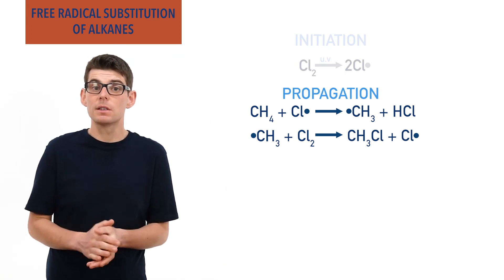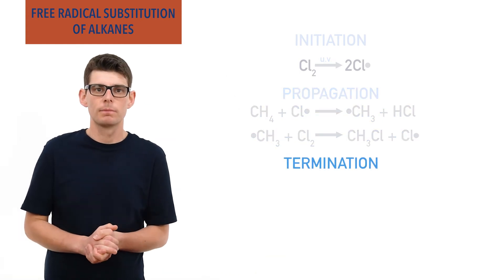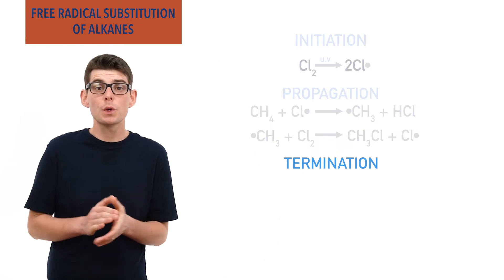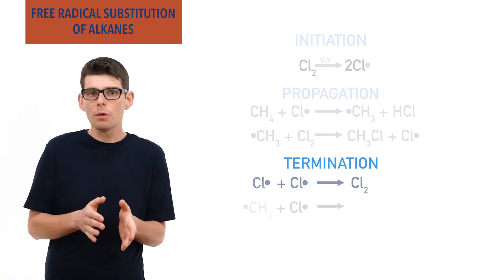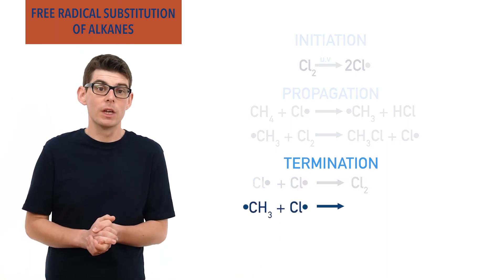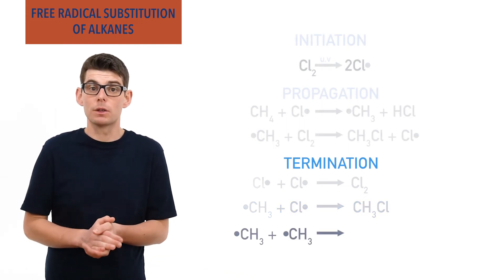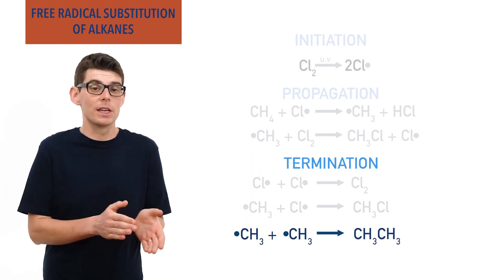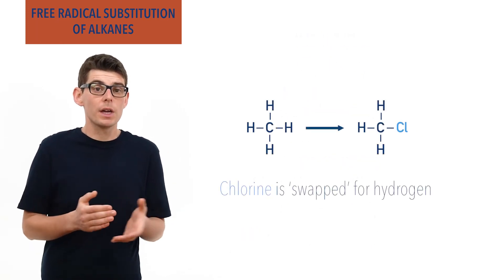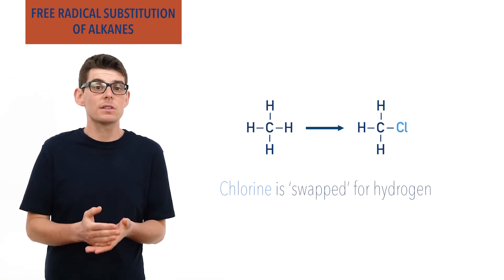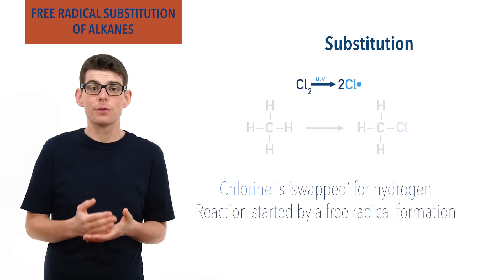Finally, two radical species can combine together to form a stable non-radical molecule in a termination step. There are several possibilities: two chlorine radicals can combine to reform a chlorine molecule, Cl2; a chlorine radical and a methyl radical can combine to form chloromethane, CH3Cl; and two methyl radicals can combine to form ethane, CH3CH3. For chloromethane, a chlorine group has been substituted for a hydrogen in the original methane, making this a substitution reaction. As a free radical started the reaction, it is described as free radical substitution.